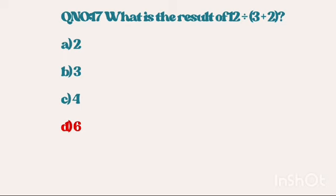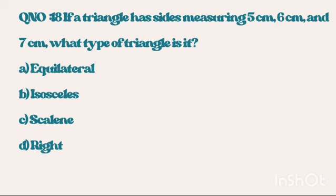Question number 18. If a triangle has sides measuring 5cm, 6cm and 7cm, what type of triangle is it? Answer is Scalene.